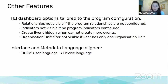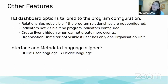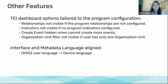For example, the tabs or buttons in the navigation bar for relationships or indicators inside a tracked entity instance dashboard will not appear if the program doesn't have relationships or indicators configured. They were visible before even when the screen had no actual actions available, which was confusing and added unnecessary noise.